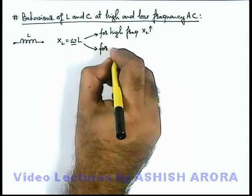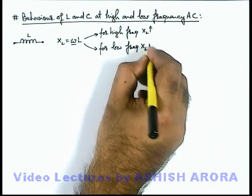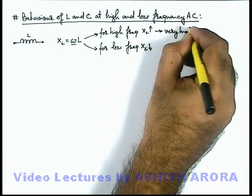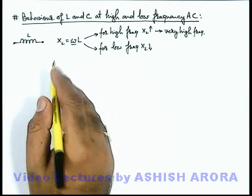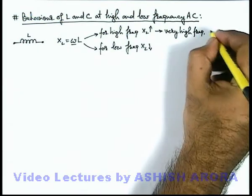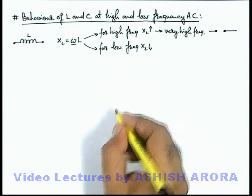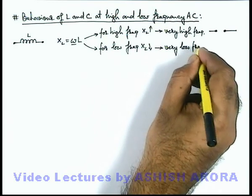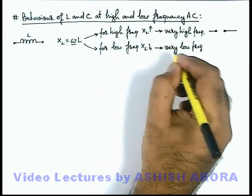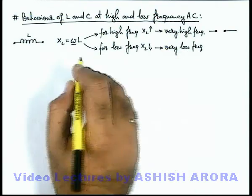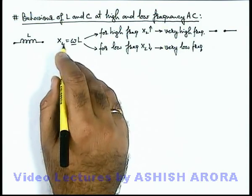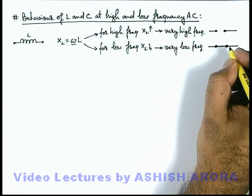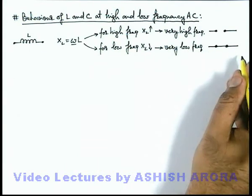Similarly, for low frequency the value of X-L is very low. At very high frequencies, the value of X-L will be so high that the inductor will behave like an open circuit. At very low frequency — or approximately at DC values where there is almost no variation in direction of current — omega will be negligible, so X-L will also be negligible, and this inductor will behave like a short circuit, which we already discussed: in DC steady state an inductor behaves almost like a straight wire.